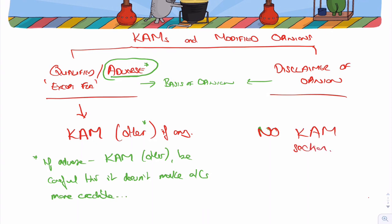So, modified opinions can either be qualified or adverse. If they're qualified, you can put a CAM in if there are other CAMs. If it's adverse, you can put a CAM in if there are any other CAMs, but just be careful if it's adverse, you're not making the accounts seem better than they really are. And finally, if it's a disclaimer of opinion when you don't have enough information, there will be no CAM section.